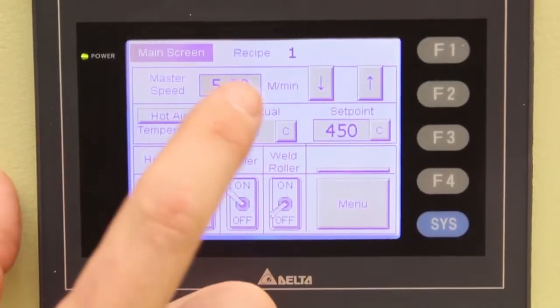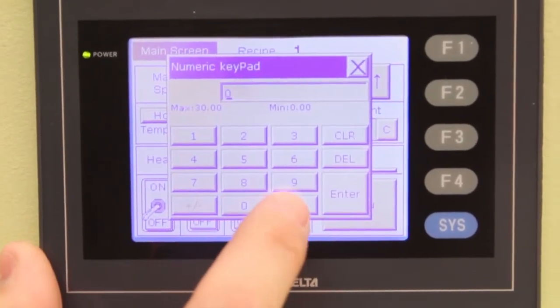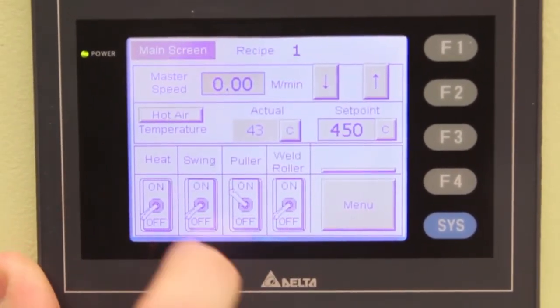For wedge alignment, set the master speed control to zero. Turn the swing on and ensure that the temperature is turned off.